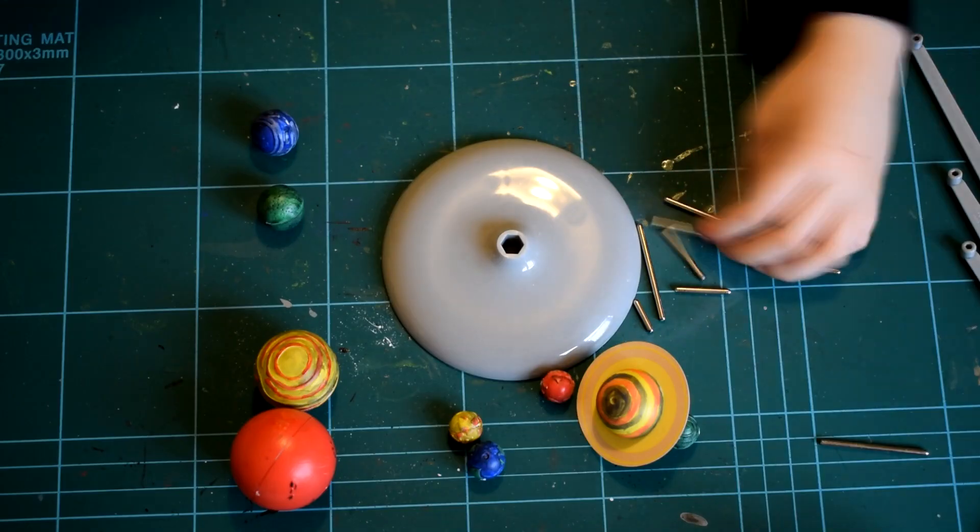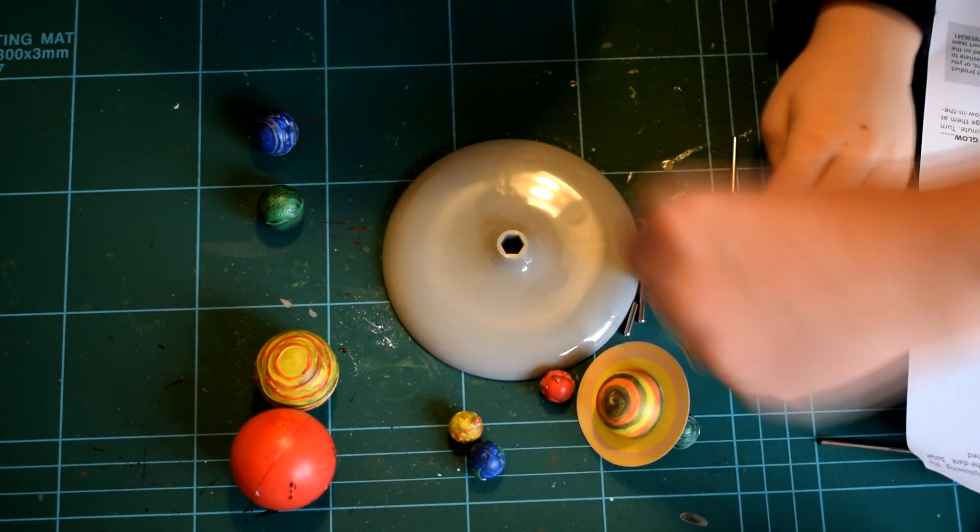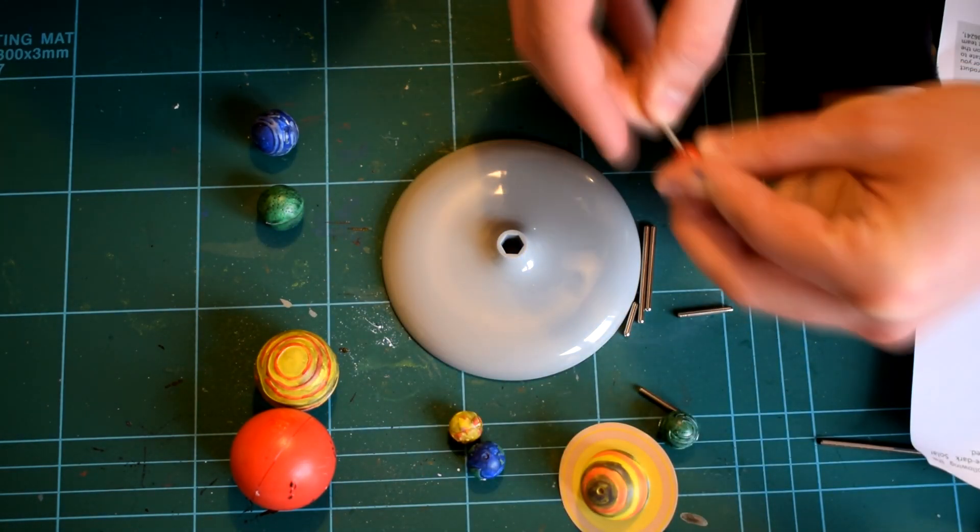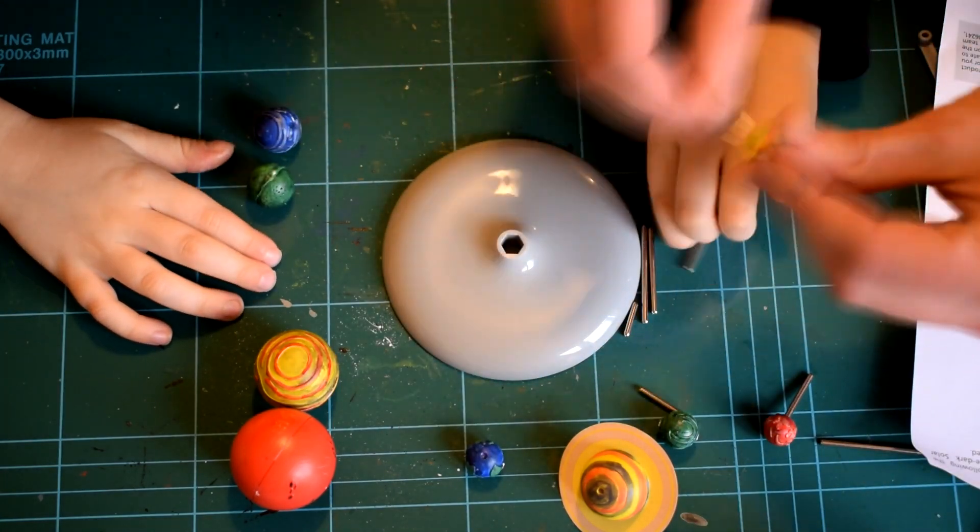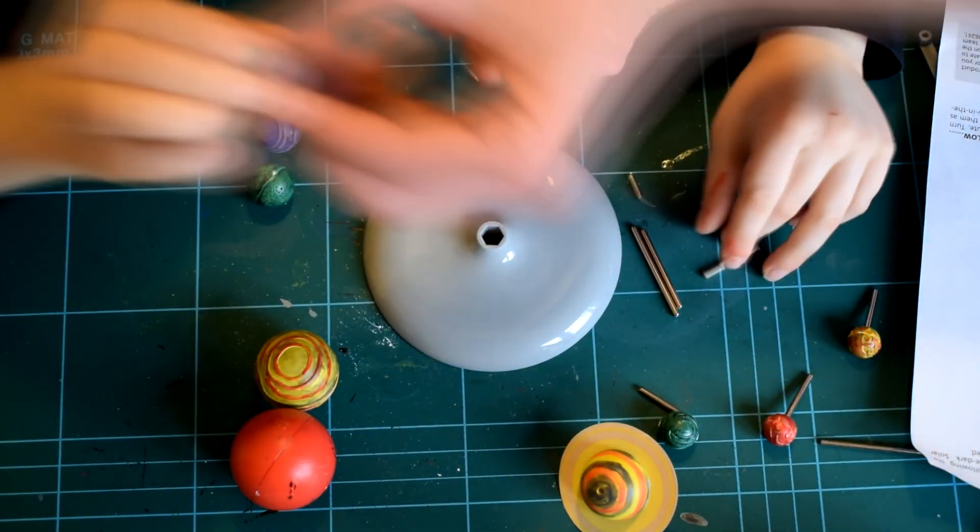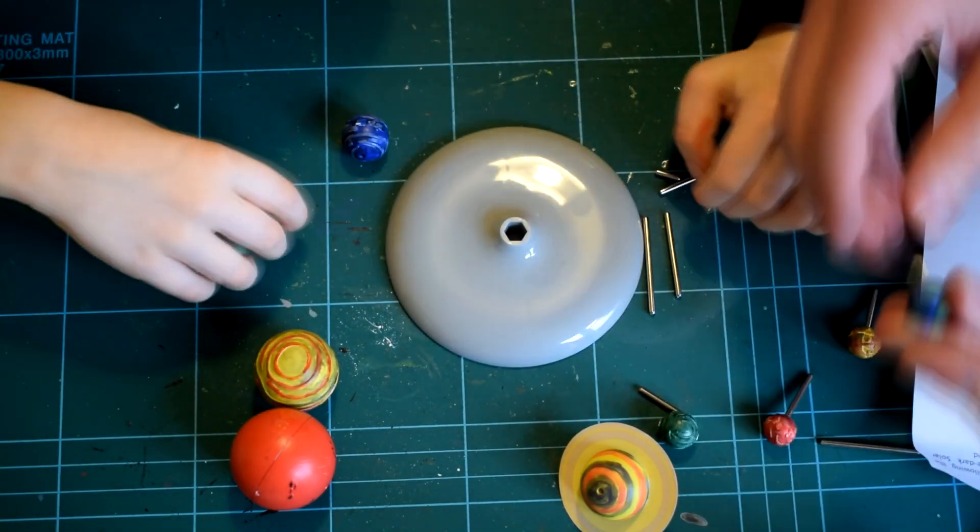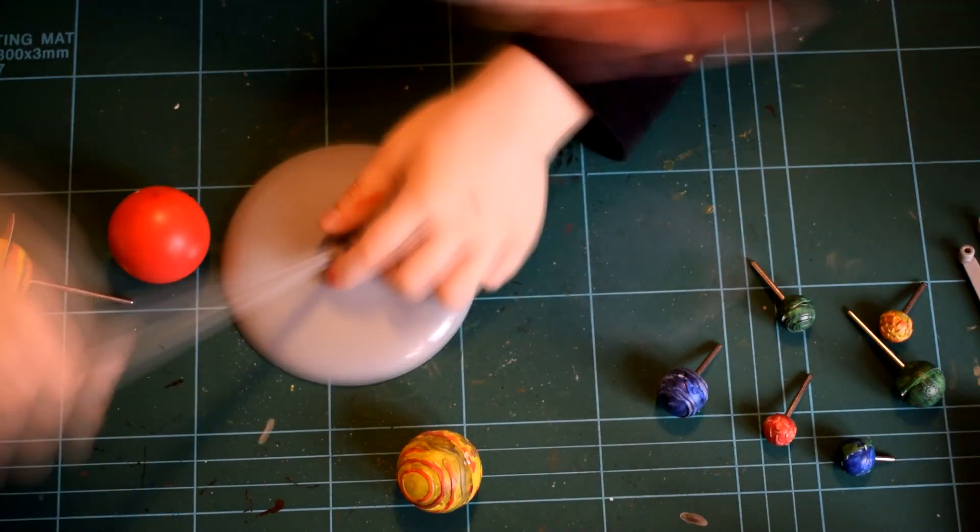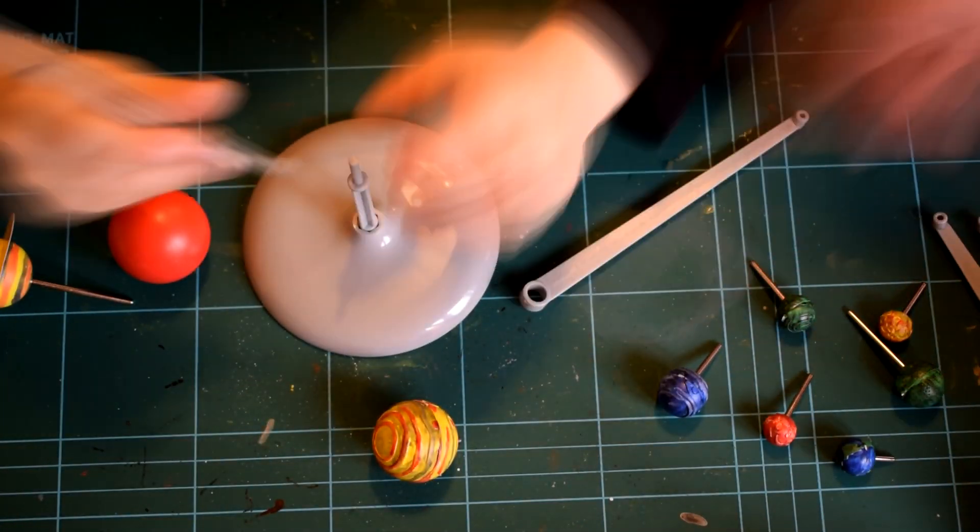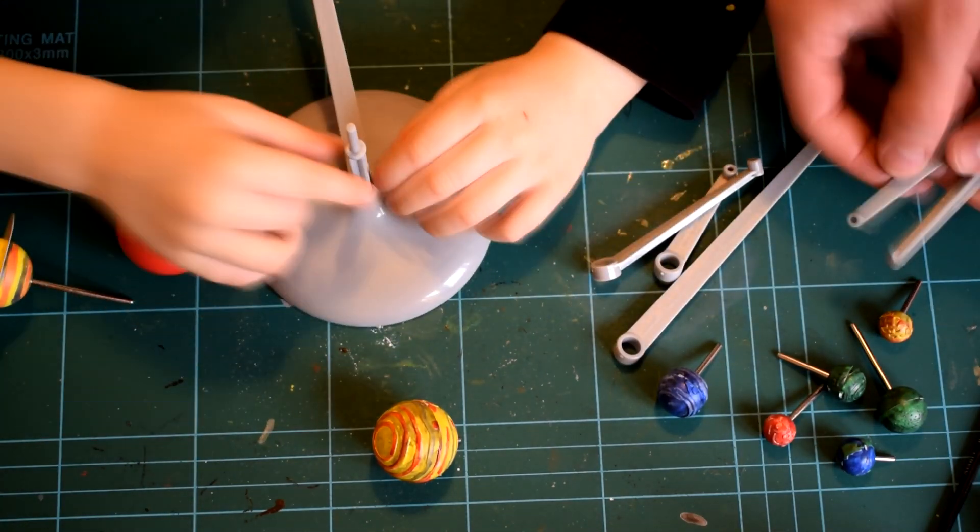The display base was then assembled, correctly identifying each planet, an appropriately sized length of metal rod was then pushed into the small hole in each sphere. The arms for the planets were then added to the base, ensuring that they were in the correct order and the right way up.